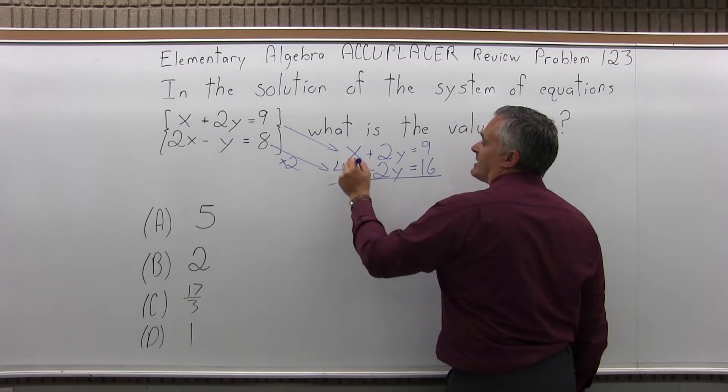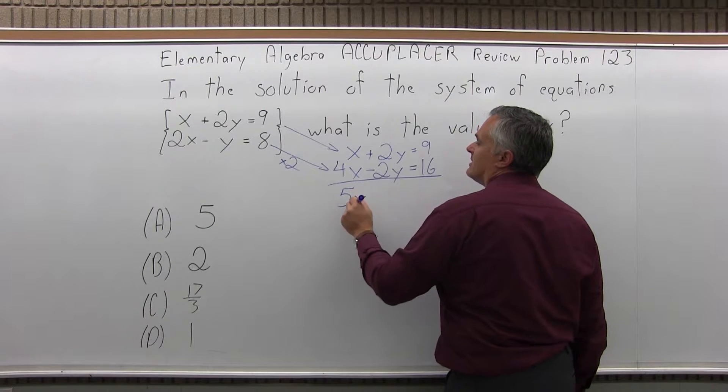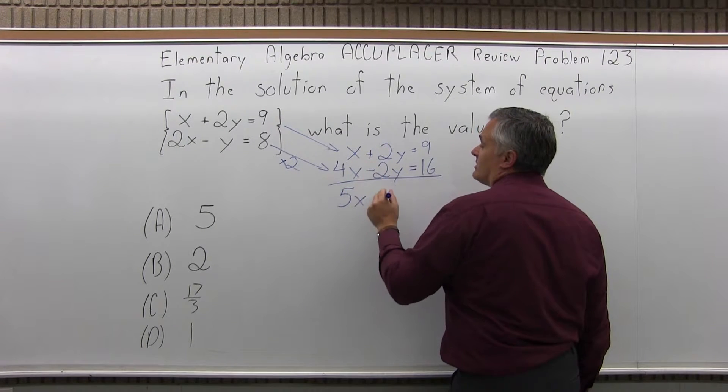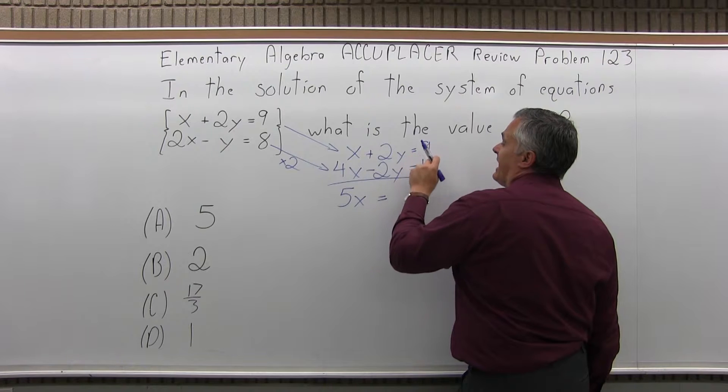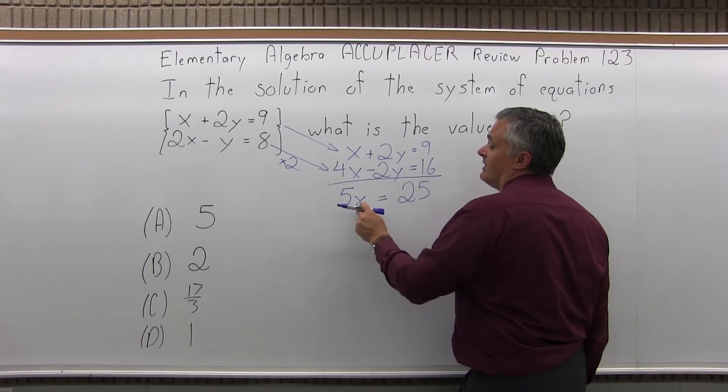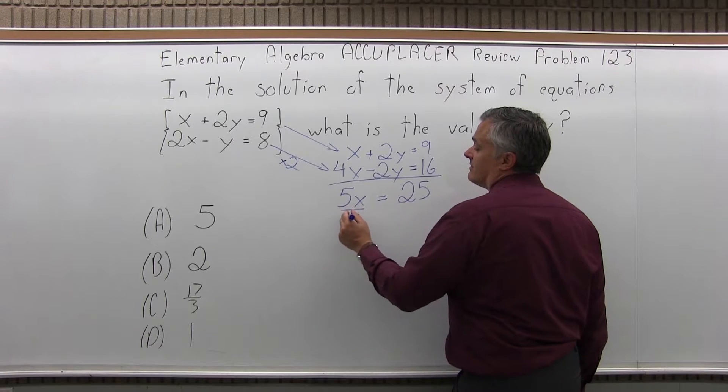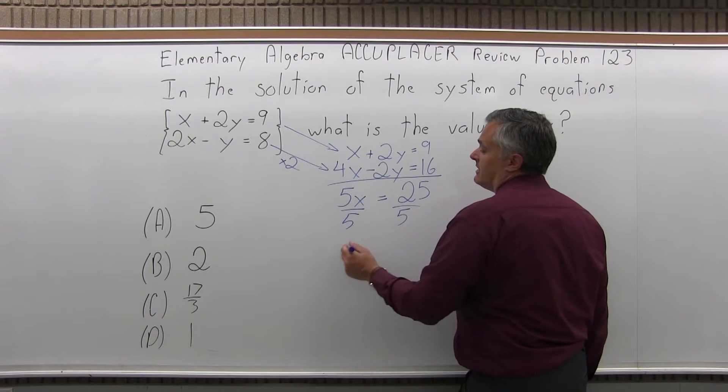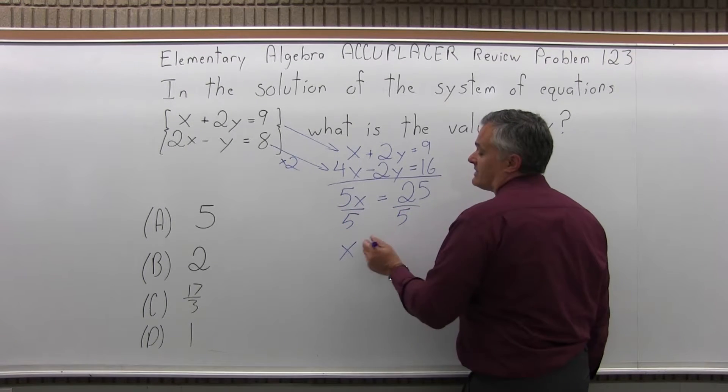Now, if I add these together, x and 4x is 5x. 2y and negative 2y cancel, which is very good. 9 and 16 is 25, positive 25. Divide out the 5 to solve for x. And 5x over 5 is x. 25 over 5 is 5.